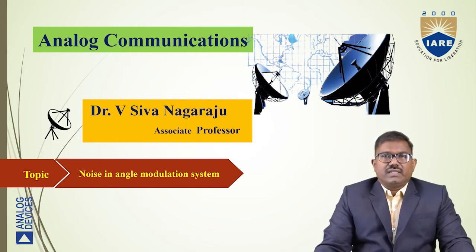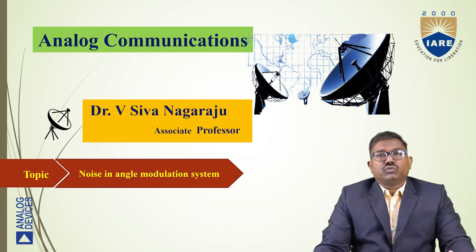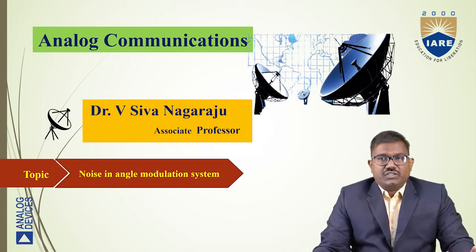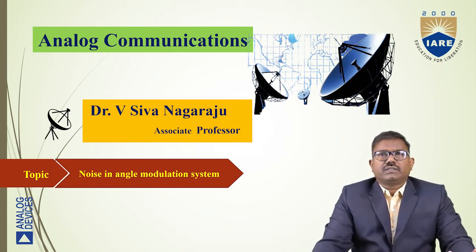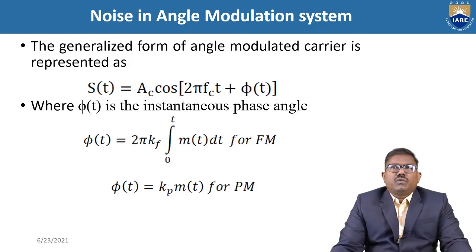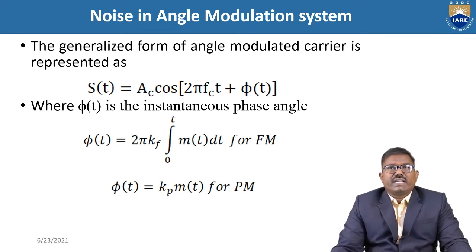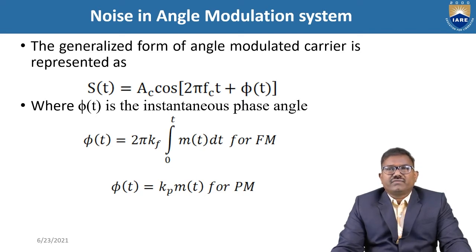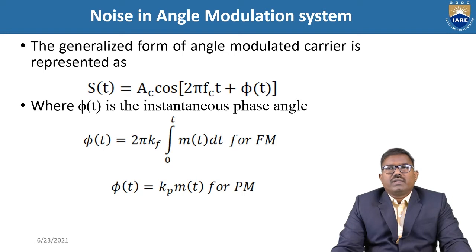How the noise is passed through this angle modulation system. Coming to the topic: the generalized form of the angle modulated carrier is written as S(t). S(t) is our angle modulated wave, represented as AC·cos(2π·fc·t + φ(t)), where AC is the carrier amplitude, fc is the carrier frequency, and φ(t) is the instantaneous phase angle.